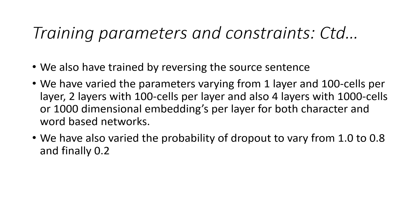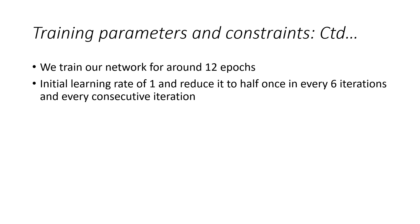We are using the probability of dropout to vary from 1.0 to 0.8 and finally 0.2 in most of the tests. We are training our network for around 12 epochs iterations. We are also dividing our batches per 150 sentences per batch. We start with the initial learning rate of one and we reduce it to half every six iterations and every consecutive iteration.